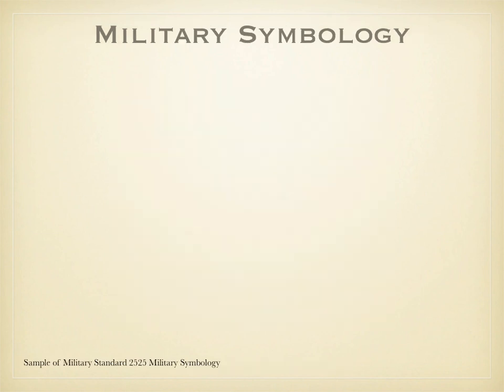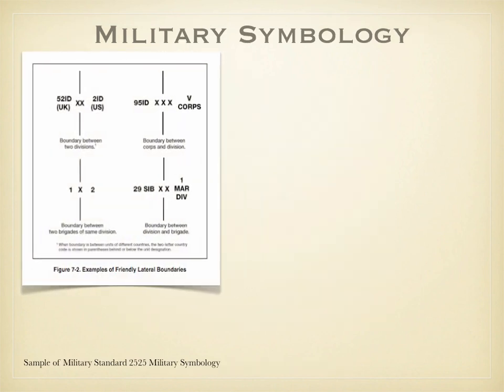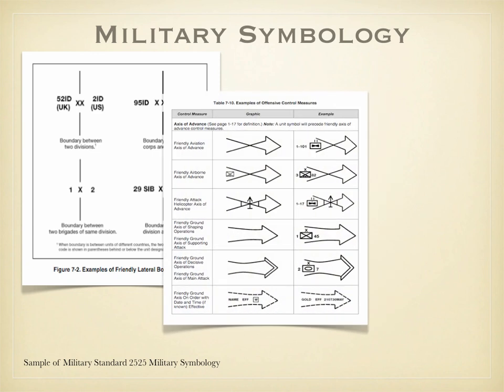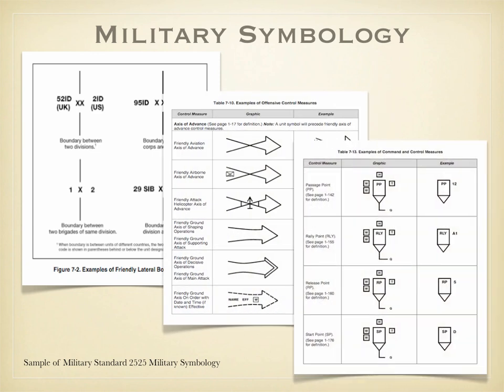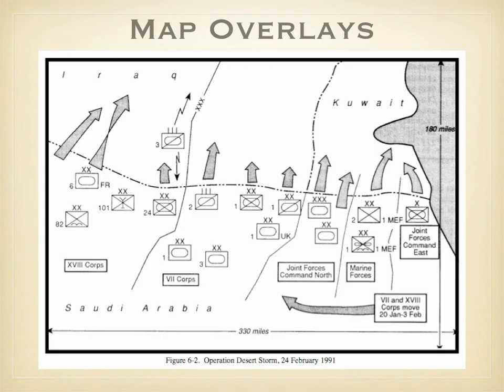These are symbols for control measures such as boundaries, axes of advance, passage points, rally points, release points, and start points. Military symbols are used to create map overlays. Map overlays facilitate planning and decision-making by representing the relations between units, boundaries, terrain features, and proposed courses of action.